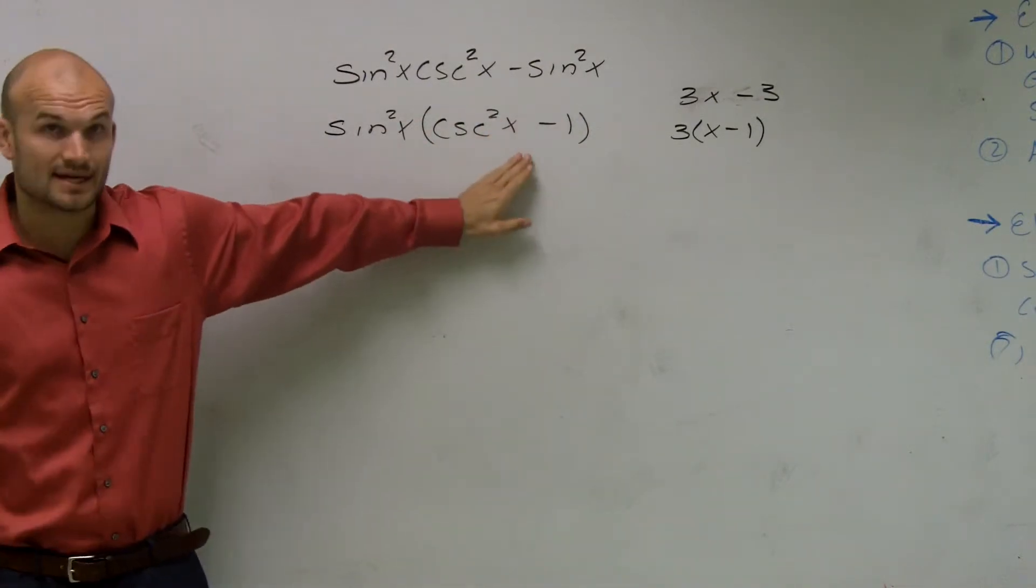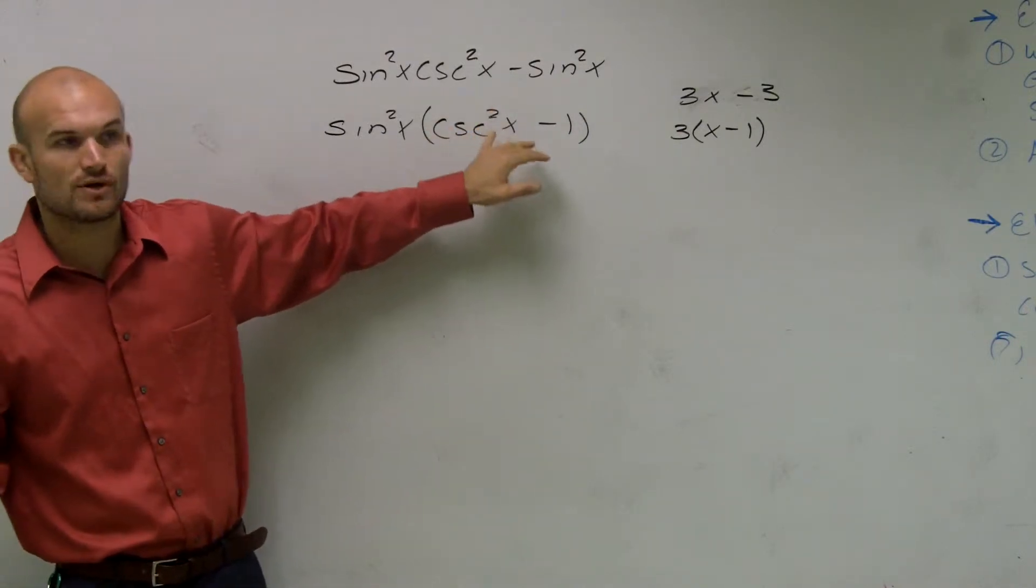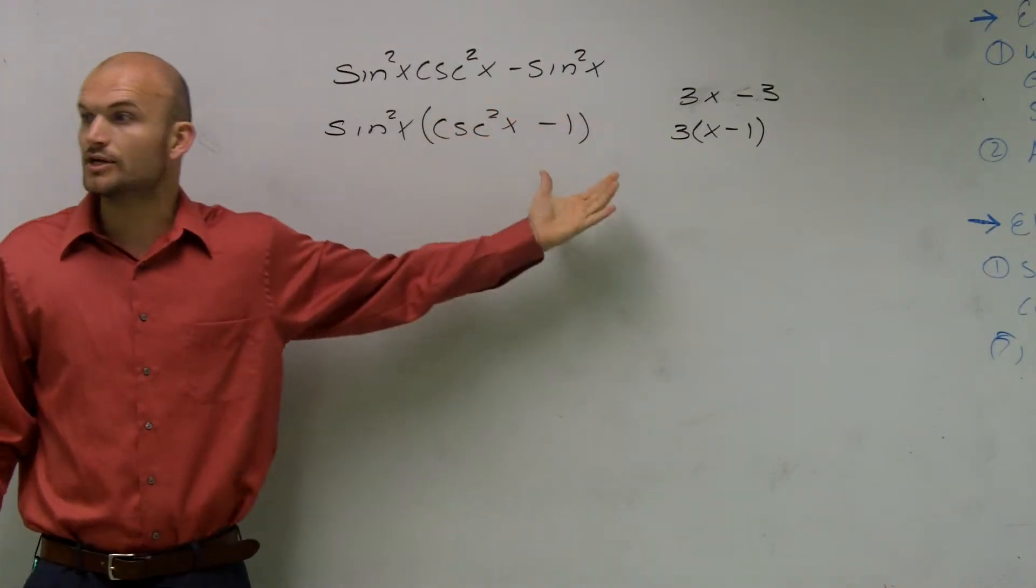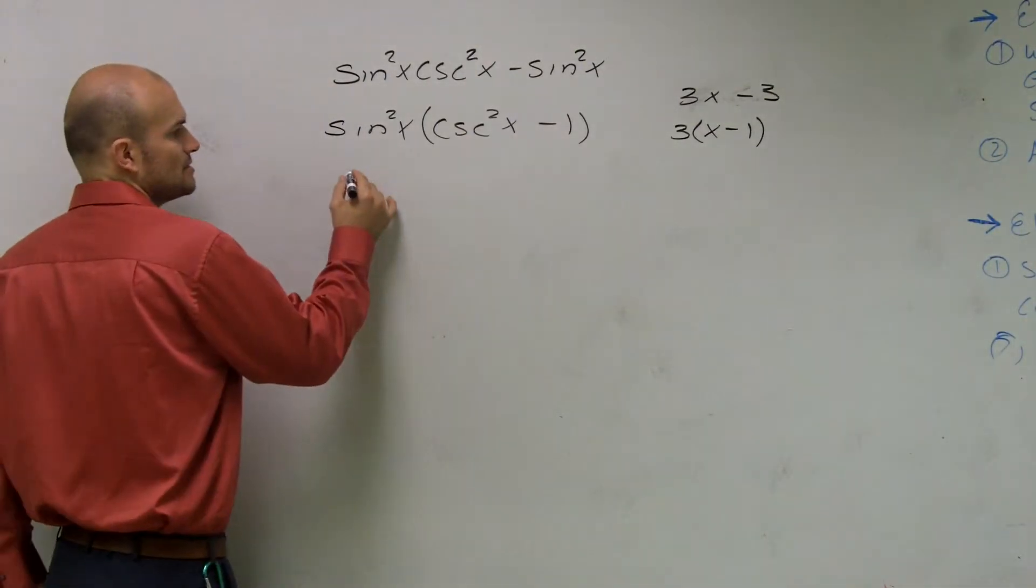Now we need to use our trig identities, which we've been practicing. What is our trig identity for cosecant squared of x minus 1? When we look at our trig identity, we know that's going to be cotangent squared.